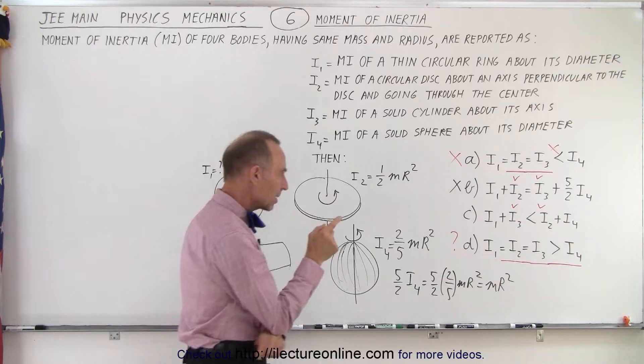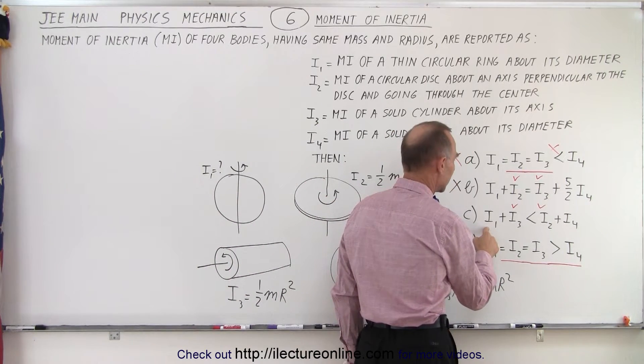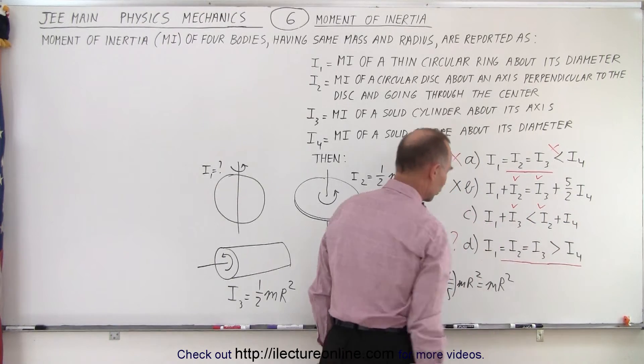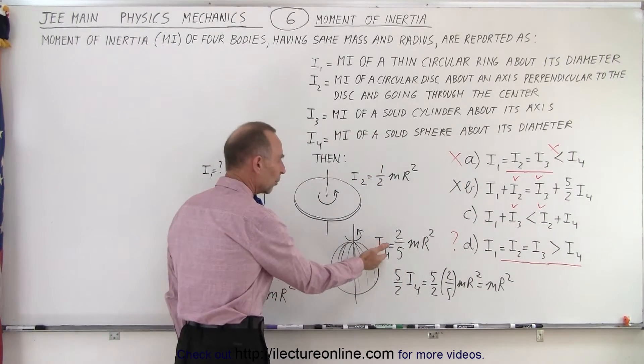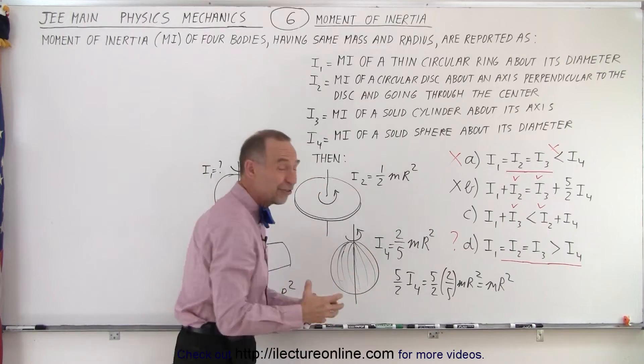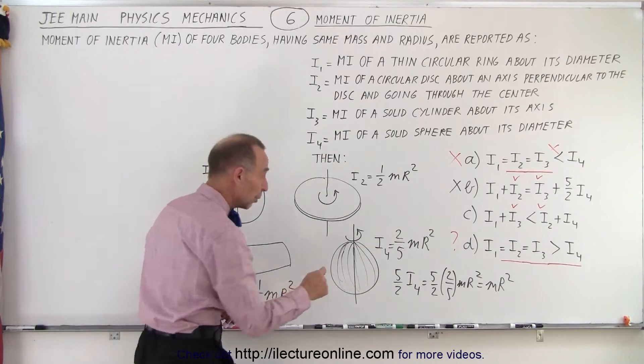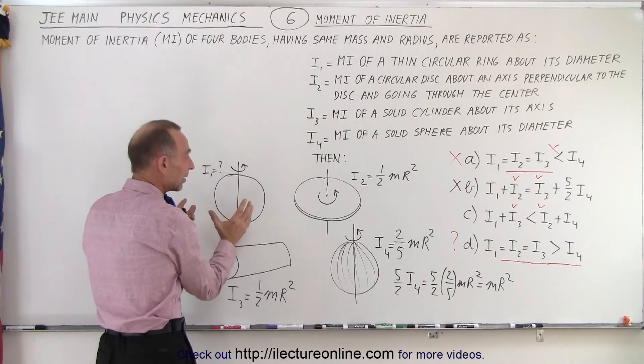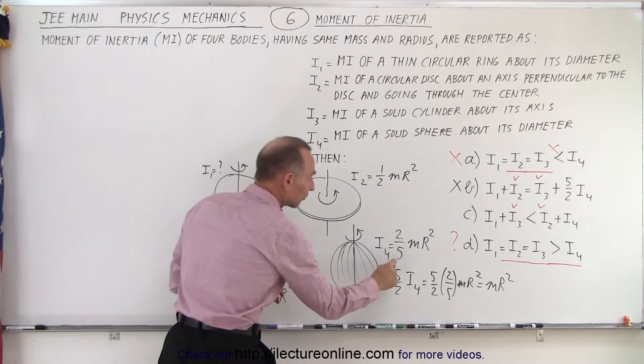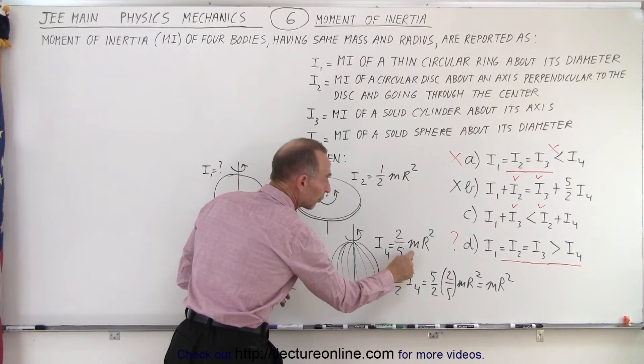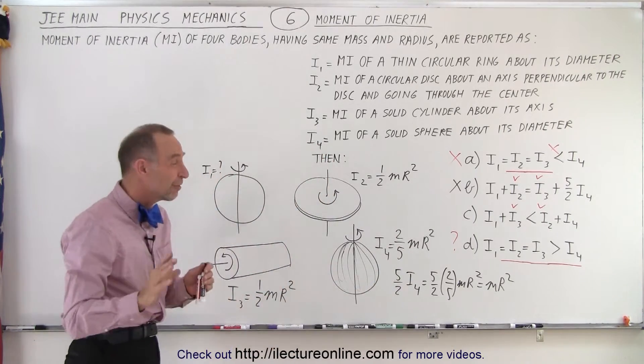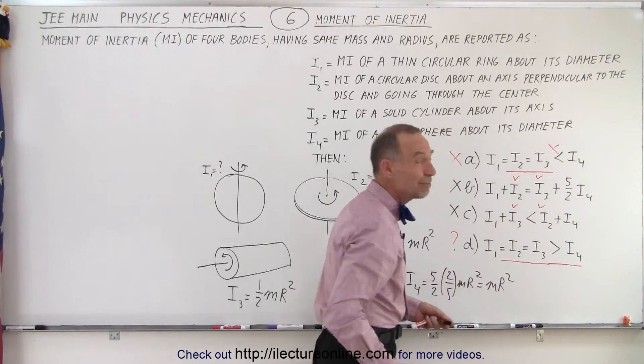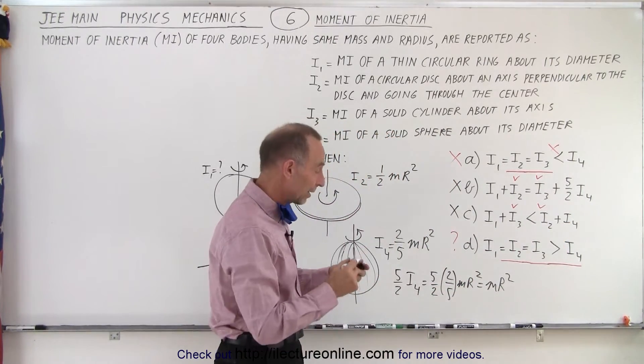So here, notice that I1 has to be smaller than I4 for this to be true. And I4 is the moment of inertia of a solid sphere which has a very small moment of inertia, two-fifths MR squared. It's doubtful that anything else, unless it's solid, could have a smaller moment of inertia than two-fifths MR squared. So it's very unlikely that C is correct.